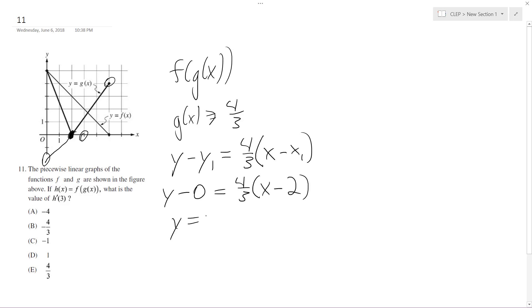So the equation for this is going to be 4x over 3 minus 8 over 3. Okay, so we have this equation - this is g of x right here.